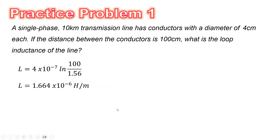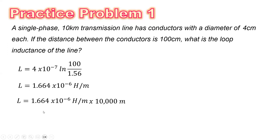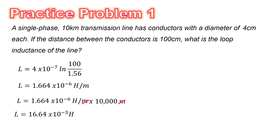Substituting D equal to 100 and R prime equal to 1.56, the total inductance will be 1.664 times 10 to the negative 6 Henry per meter. Since we are asked for the loop inductance of the line, we multiply the inductance per meter by the length of the transmission line, which is 10,000 meters, because that is 10 km. The unit of meters will be canceled. Then the final answer for the inductance is 16.64 times 10 to the negative 3 Henry, or simply 16.64 millihenry. That is the loop inductance of the line.